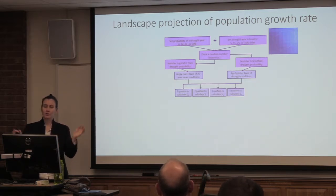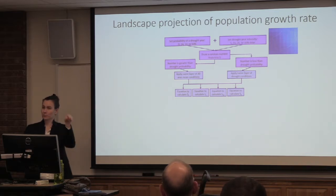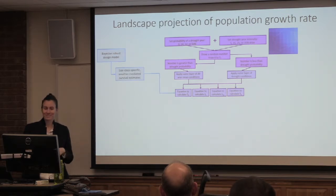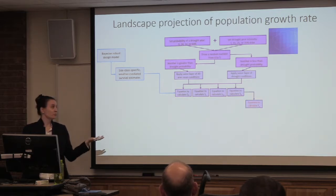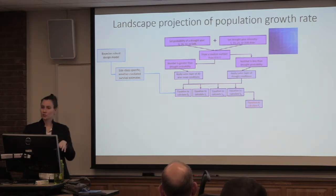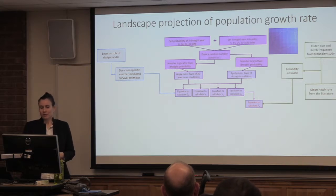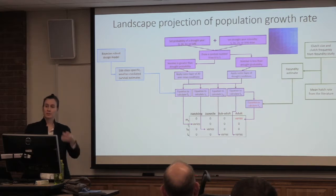Then we had the model draw a random number from 0 to 1. If that number was greater than the drought probability, we applied the raster of 30-year mean precipitation — normal conditions. If less than the drought probability, we applied the drought condition raster — either 5%, 15%, 25%, or 35% drier. That precipitation value gets fed into the logistic equations for each size class, producing a survival estimate based on precipitation set for that particular year. These size-class-specific weather-mediated survival estimates come from the Bayesian robust design model.